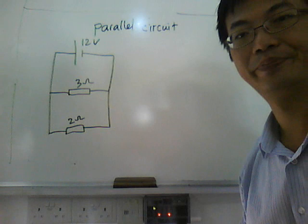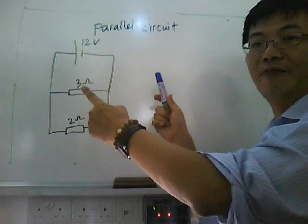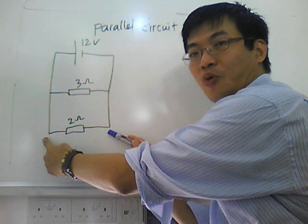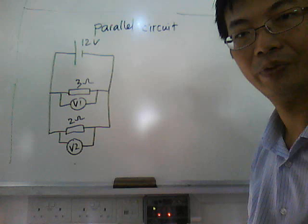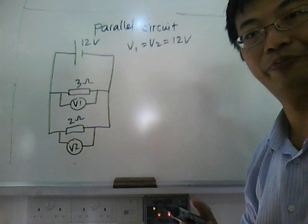The first thing to know is in a parallel circuit, the voltages are all the same: 12V, 12V, and 12V. So if you have a voltmeter V1 and a voltmeter V2, both V1 and V2 read 12V.